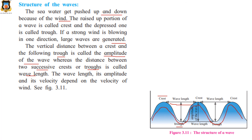The upper portion is called crest, the portion which has gone down is called trough. The distance between two successive waves is called wavelength, and the vertical distance is called the amplitude of the wave. The wavelength, amplitude, and velocity of a wave depend on the velocity of the wind. You can understand this from figure 3.11.